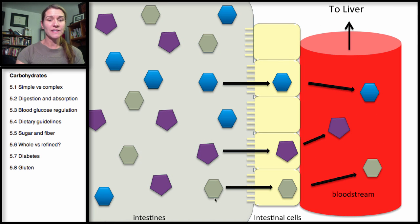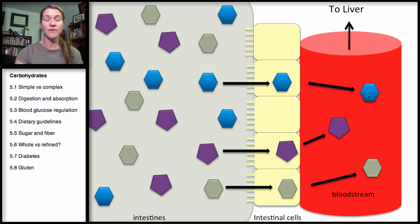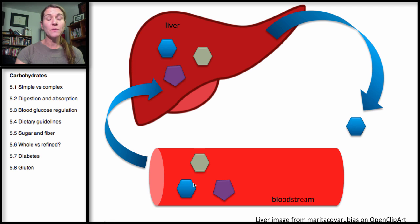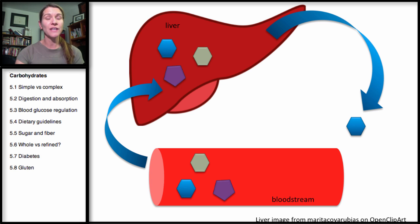This represents the intestines, these are the intestinal cells, and this represents the bloodstream. As glucose, fructose, and galactose — the monosaccharides — have already been broken down from their carbohydrate foods, they then cross through the intestinal cells into the bloodstream, where they can travel throughout the body. Within the bloodstream, most cells in the body can use glucose, picking it up and immediately using it for energy.